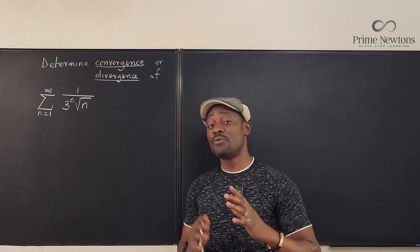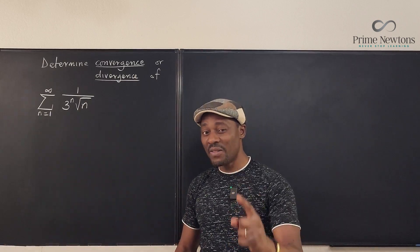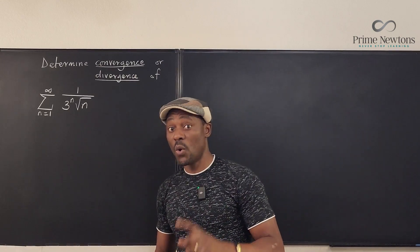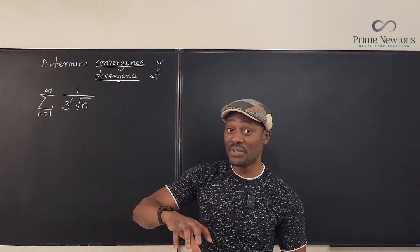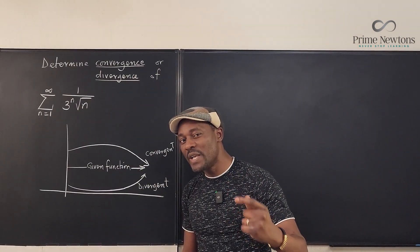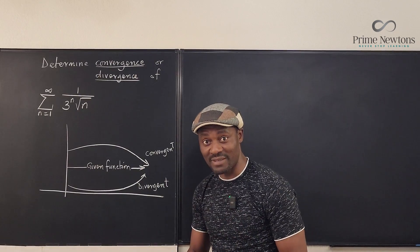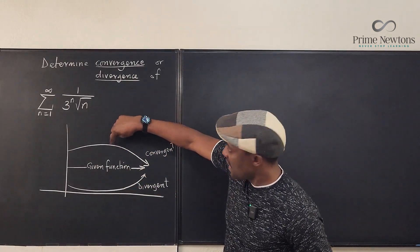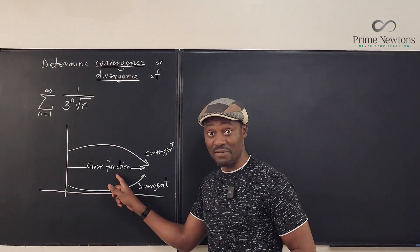This is the main idea behind direct comparison. You have to look at the function you have and look at another function that is similar — one that you know is convergent or that you know is divergent. The function you're given will always be in the middle. The convergent function is greater than the function that we have; the divergent function is less than the function we have.